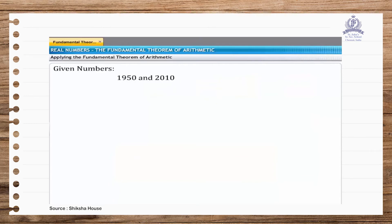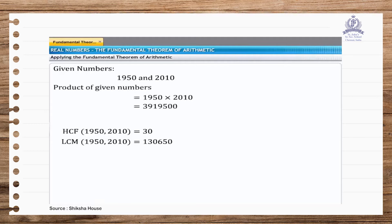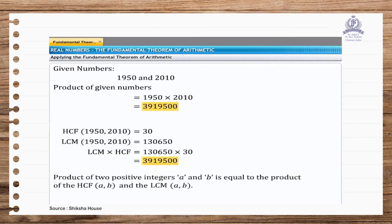We have expressed two randomly selected numbers as products of prime numbers and used their prime factorizations to calculate their HCF and LCM. Now let us look at another interesting relation. The product of 1950 and 2010 equals the product of their HCF and LCM. This result is true for all positive integers and is often used to find the HCF of two given numbers if their LCM is given and vice versa.